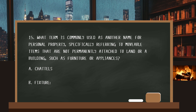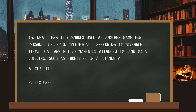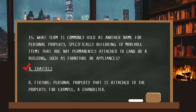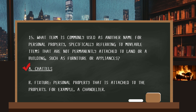Number fifteen. What term is commonly used as another name for personal property, specifically referring to movable items that are not permanently attached to land or a building, such as furniture or appliances? The answer is A: chattels. Fixtures are personal property that is attached to the property — for example, a chandelier. It's personal property while it's in the box, but once it's attached to the ceiling, it is a fixture.